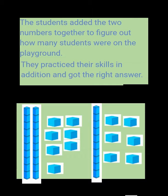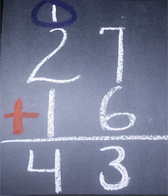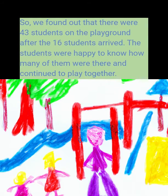The students added the two numbers together to figure out how many students were on the playground. They practiced their skills in addition and got the right answer. So we found out that there were 43 students on the playground after the 16 students arrived. The students were happy to know how many of them were there and continued to play together. Thanks for joining us.